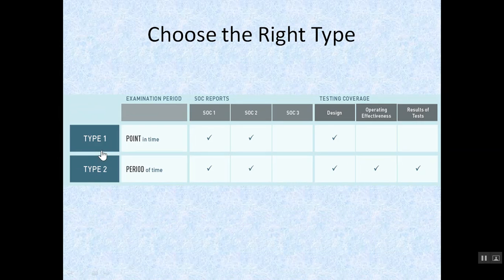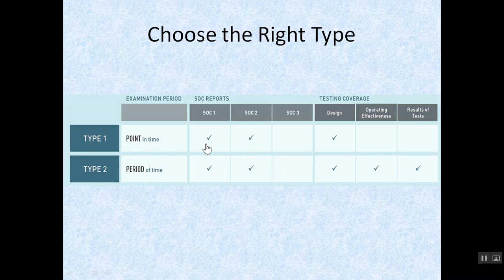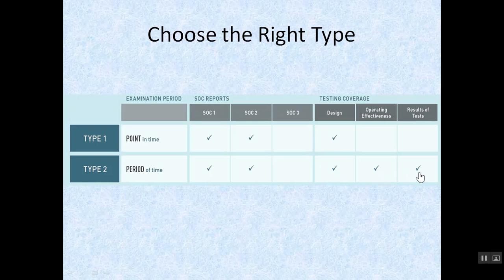You must know the difference between Type 1 and Type 2 reports. Type 1 report is a point-in-time report — it assesses the effectiveness of controls on a particular date. Type 2 report assesses the effectiveness of controls for a period between 6 months and 1 year. Type 1 and Type 2 reports are applicable to SOC 1 and SOC 2 only; SOC 3 does not have Type 1 or Type 2 reports. In Type 1, auditors check the design of controls only, while in Type 2, auditors check the design, operating effectiveness, and also report results of tests performed.